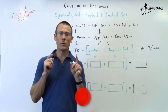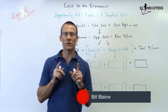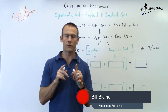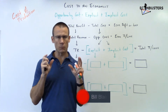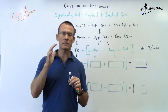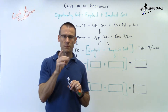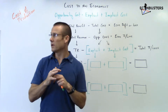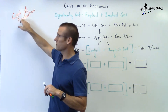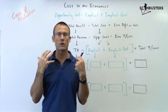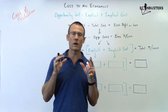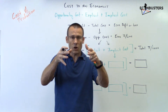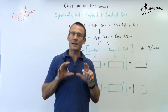Hey everybody, welcome back. We are now turning to a huge subsection of microeconomics called Theory of the Firm. When you hear Theory of the Firm, we're basically focused on how firms make decisions. Underneath Theory of the Firm is this unit called Cost of Production, and we're going to have several videos on understanding what a firm considers as cost and what the types of cost are.